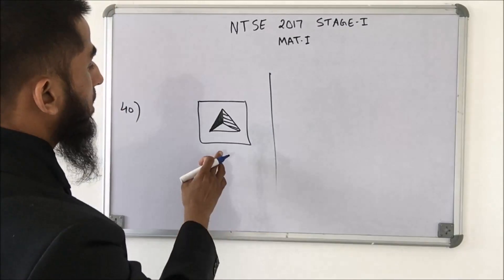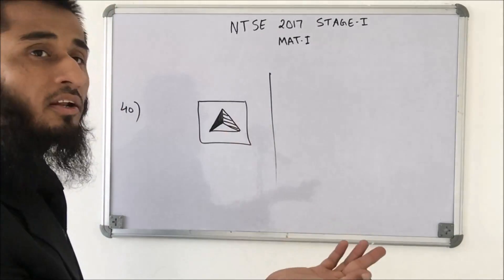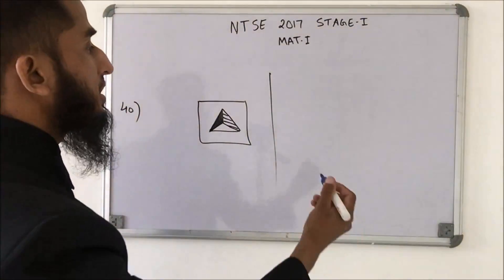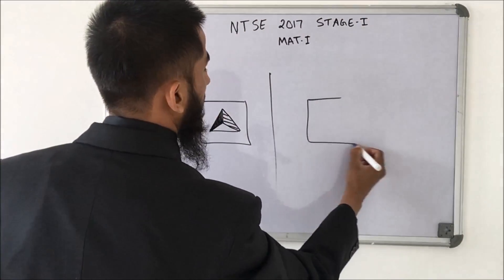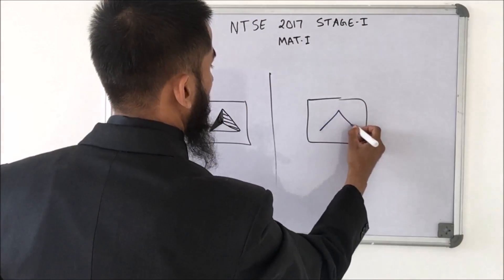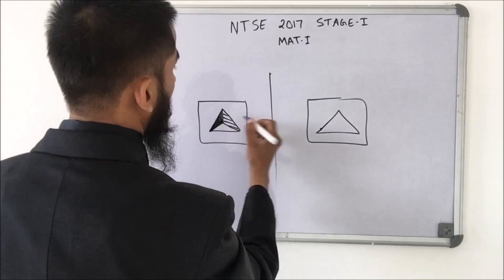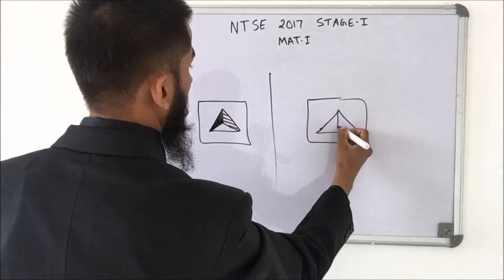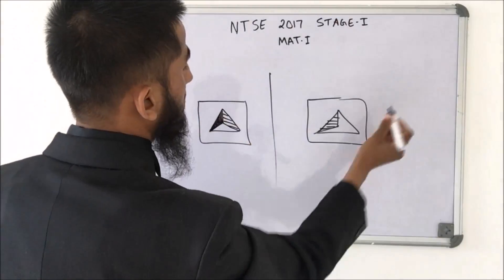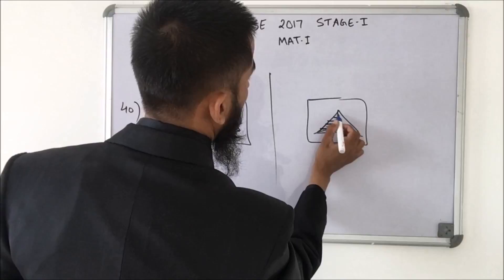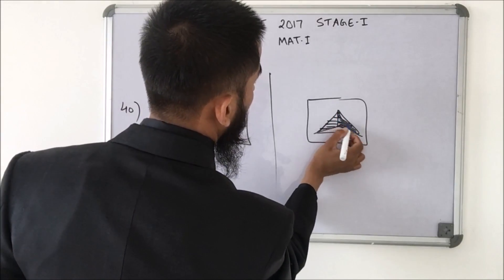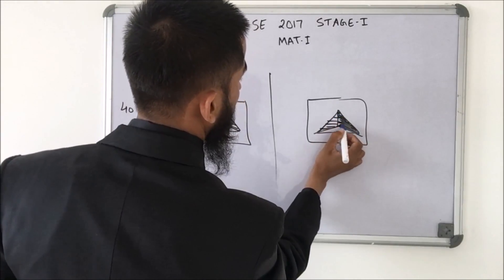For this mirror image question, again create your own mirror image instead of evaluating the options directly. The triangle is mirrored, then the light shaded region and the dark shaded region are placed on the opposite sides. This gives the correct option.